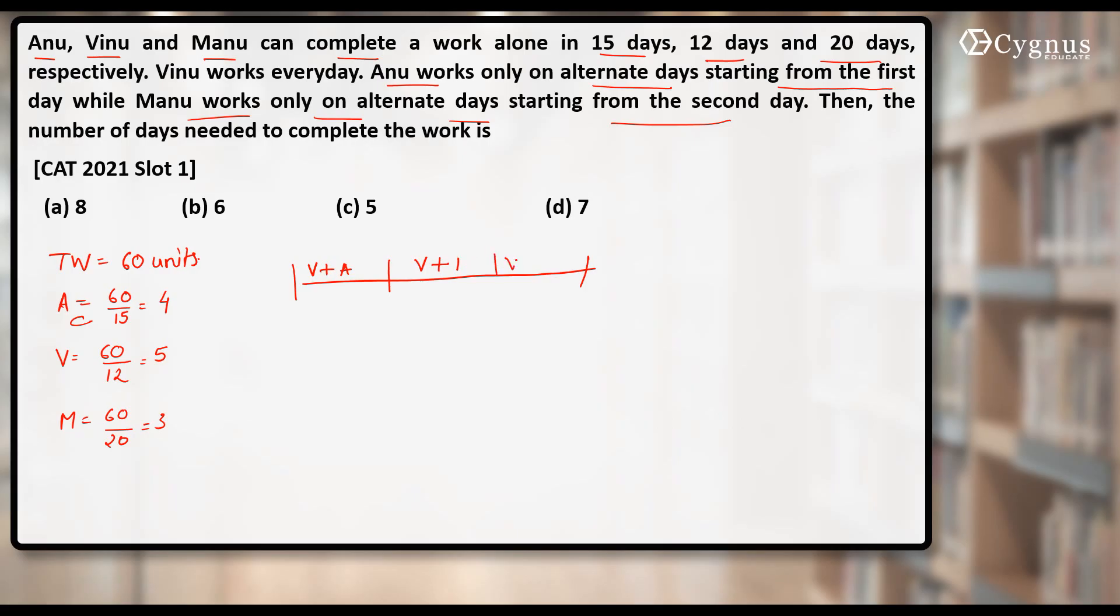Third day again Vinu will be working, then Vinu will be working with Anu. Fourth day which pair will be working? Vinu and Manu, because Manu is working on every second day.